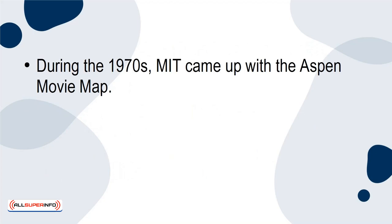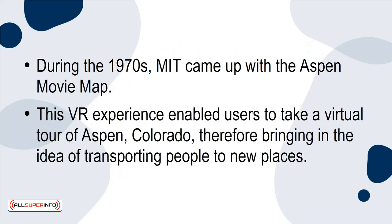During the 1970s, MIT came up with the Aspen Movie Map. This VR experience enabled users to take a virtual tour of Aspen, Colorado, therefore bringing in the idea of transporting people to new places.